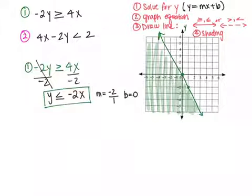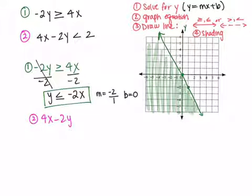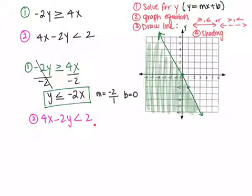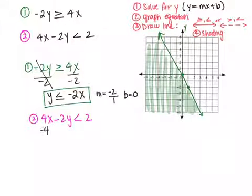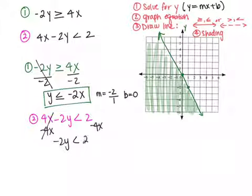Now that I'm done with shading, I want to start on the second equation: 4x minus 2y is less than 2. The first step is to solve for y, so I need to move the 4x term over since it's the furthest from y on the left-hand side. I subtract 4x from both sides — the 4x's cancel, negative 2y drops down, and 2 and negative 4x are not like terms so I bring them down. Then I divide both sides by negative 2.